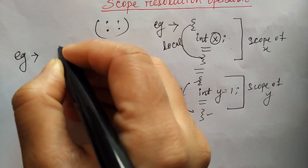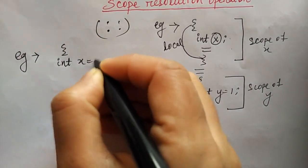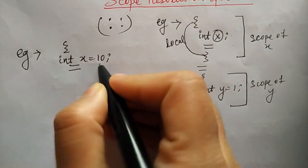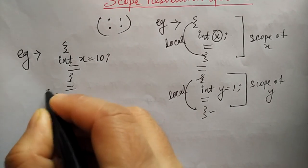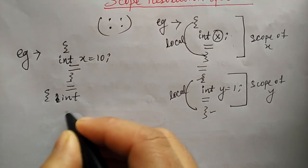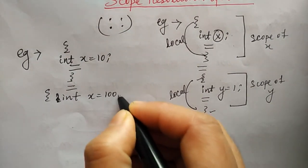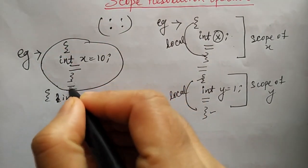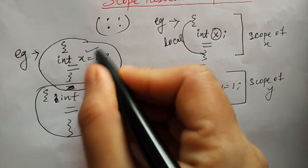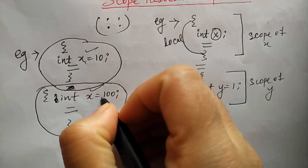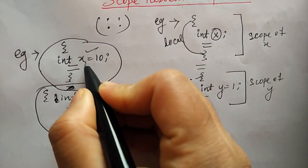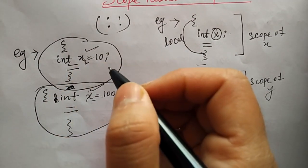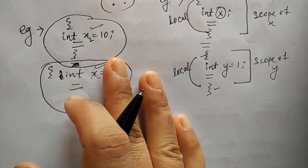One variable name can be declared in two places within different functions. Here I have one function and here there is another function with int x equal to 100. Both variables use the name x, but both memory locations will be different because this x is in one function and this x is in the other function. So these are two different x variables.